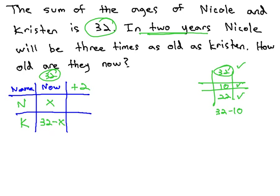We're now ready to continue like we would any other age problem. A change of 2 years in the future means we're adding 2 to Nicole, x plus 2, and adding 2 to Kristen. 32 plus 2 is 34, and we're still subtracting x.